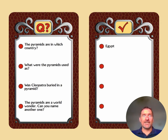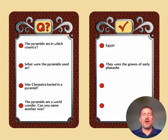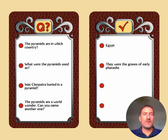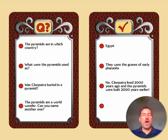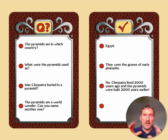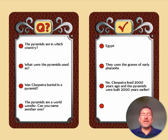Next question: what were the pyramids used as? They were the graves of the early pharaohs — tombs. Was Cleopatra buried in a pyramid? No — Cleopatra actually lived 2,000 years ago and the pyramids were built about 2,000 years before that, so about 4,000 years ago. Big difference. And final question: the pyramids are a world wonder — can you name another one?